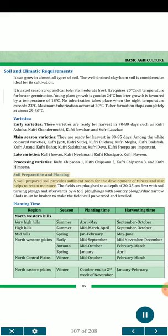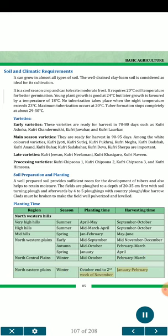Soil Preparation and Planting: A well-prepared soil provides sufficient room for tuber development and helps retain moisture. Fields are plowed to a depth of 20–35 cm, first with a soil-turning plow and afterwards by 4–5 plowings with country plow or disk harrow. Clods must be broken to make the field well-pulverized and level. Planting Time by Region: Northwestern hills (very high hills) — summer, April–May, harvest September–October. High hills — summer, mid-March–April, harvest September–October. Mid hills — spring, Jan–February, harvest May–June. Northwestern plains — early, mid-September, harvest mid-November–December. Autumn — mid-October, harvest February–March. Spring — January, harvest April. North central plains — winter, mid-October, harvest February–March. Northeastern plains — winter, October end to 2nd week of November, harvest January–February.